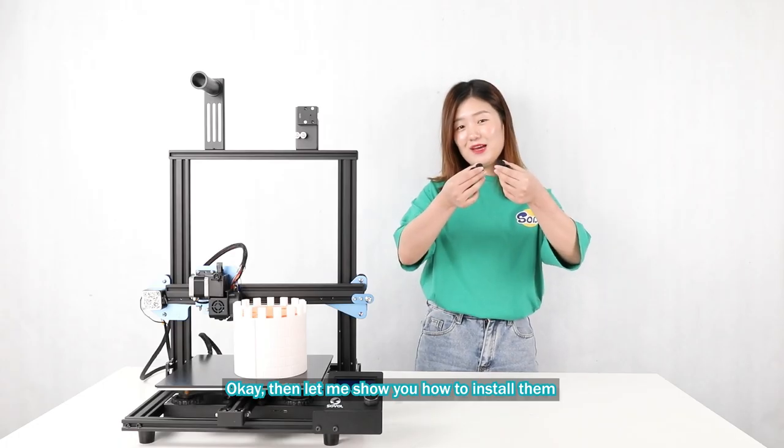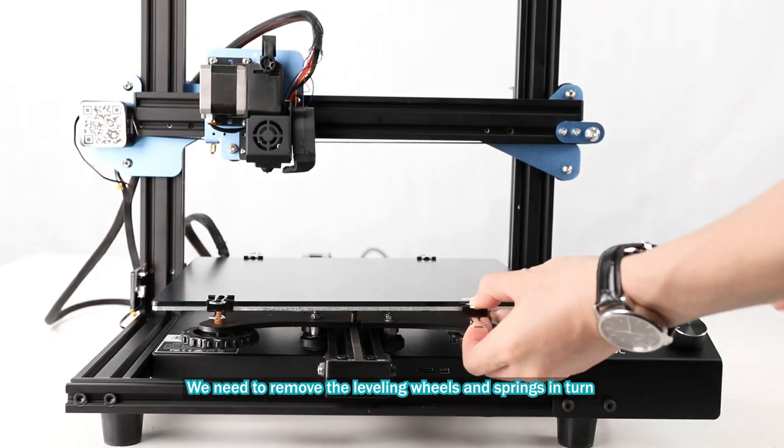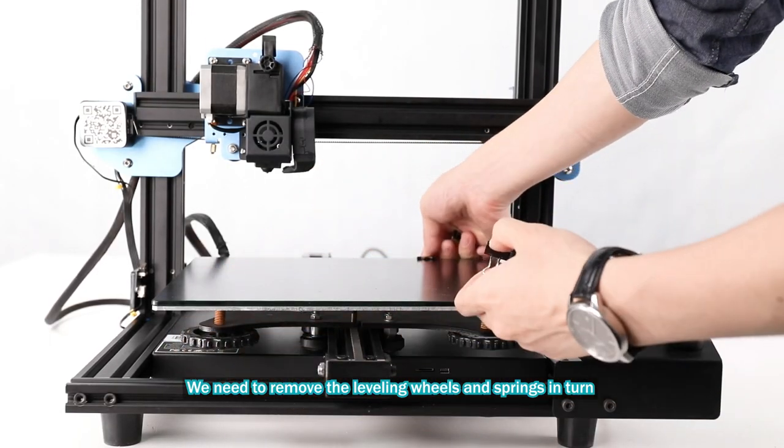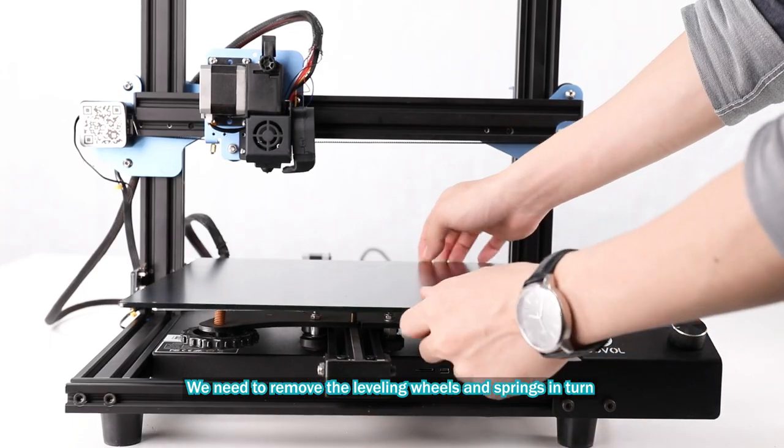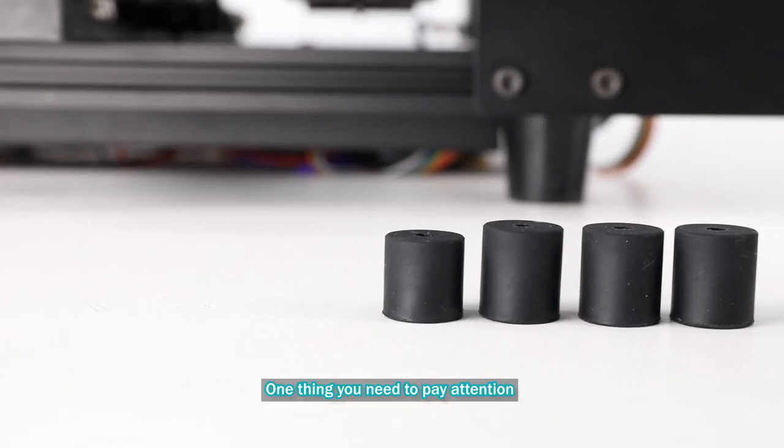Okay, then let me show you how to install them. We need to remove the leveling wheels and springs so that you can install the solid columns. One thing you need to pay attention: